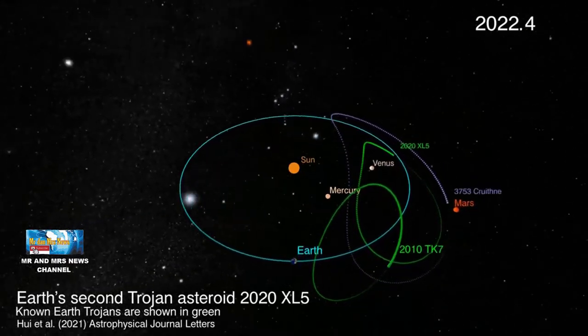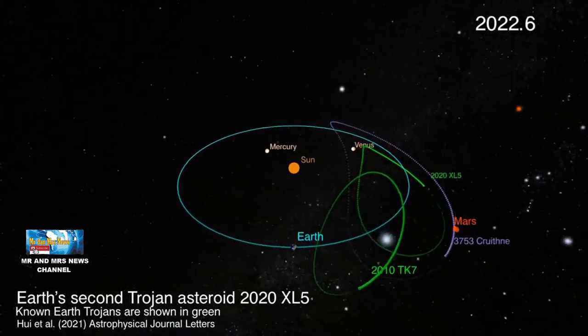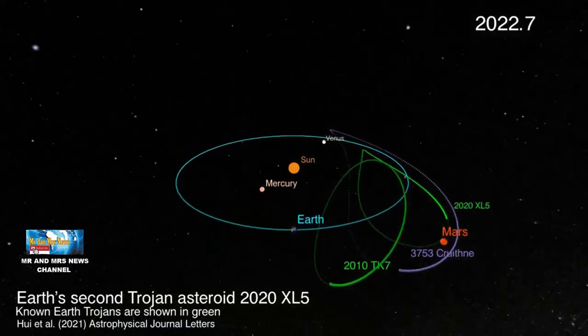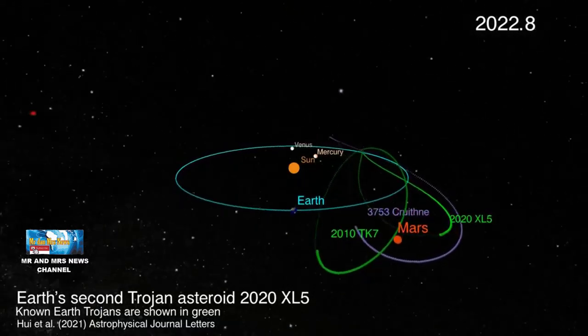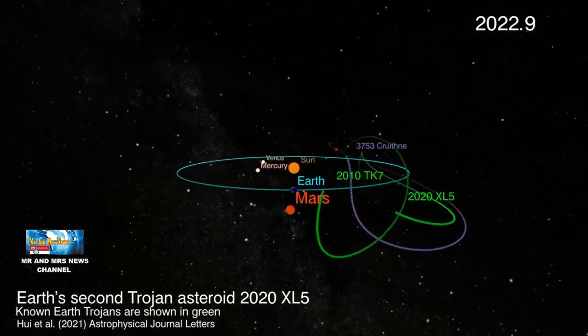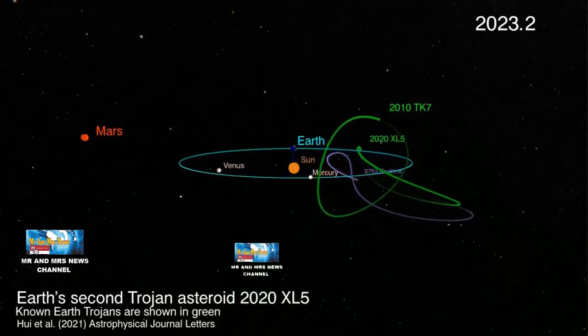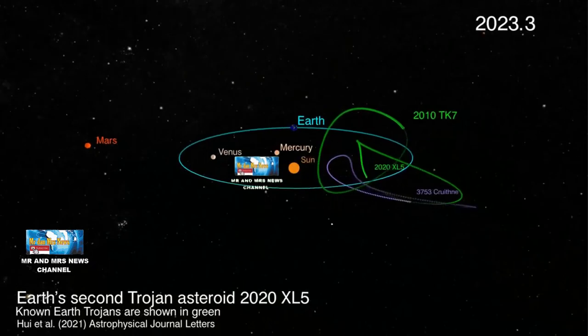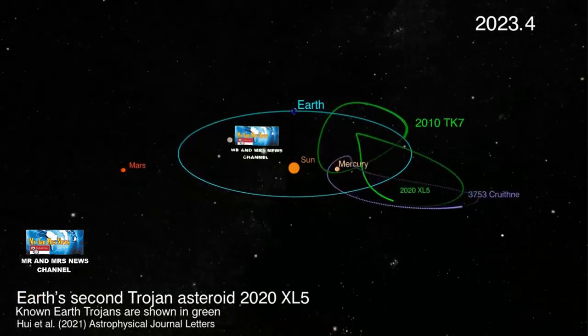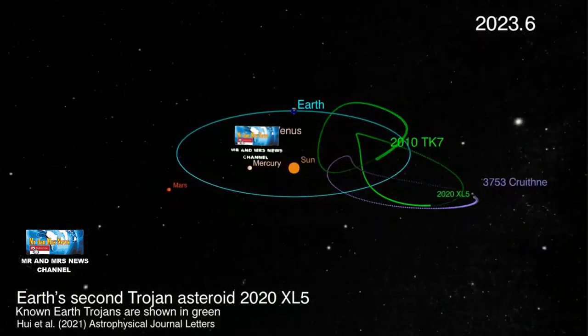Di titik Lagrange, tarikan gravitasi antara planet dan matahari seimbang dengan gaya sentripetal dari setiap benda kecil di wilayah tersebut. Setiap sistem dua benda memiliki lima titik Lagrange, di antara bumi dan bulan, antara bumi dan matahari.